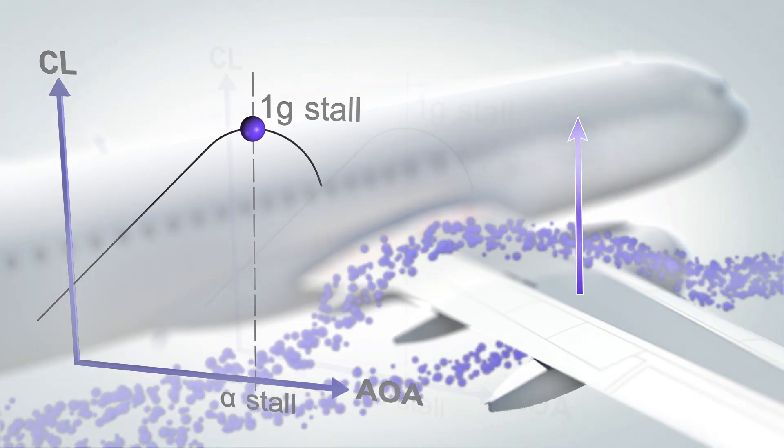In addition, we can also notice the activation of another protection, the alpha floor function, that automatically sets TOGA thrust in order to increase the aircraft energy.